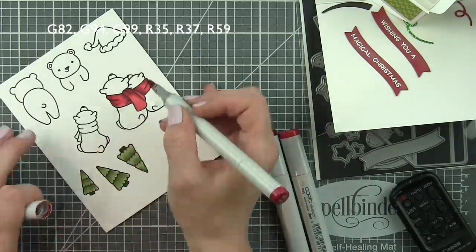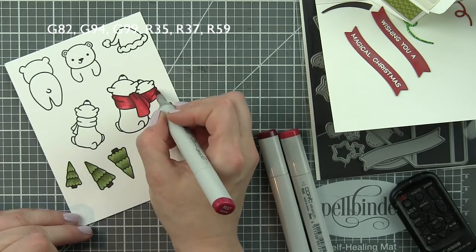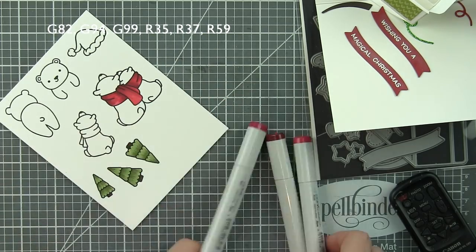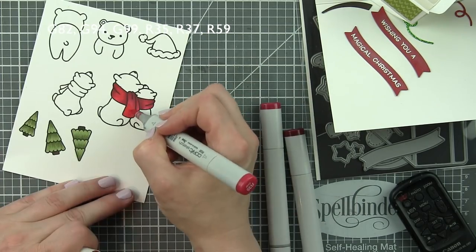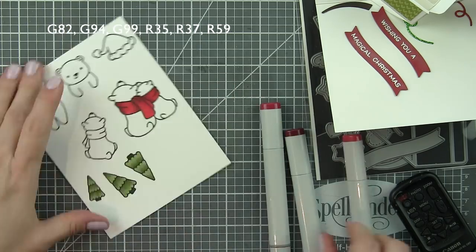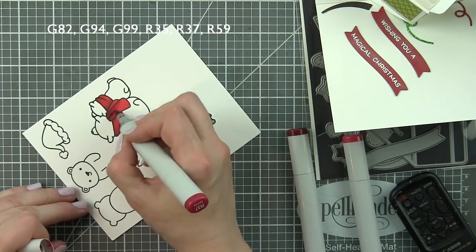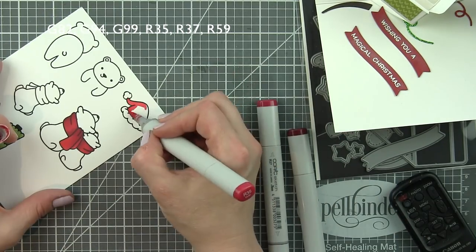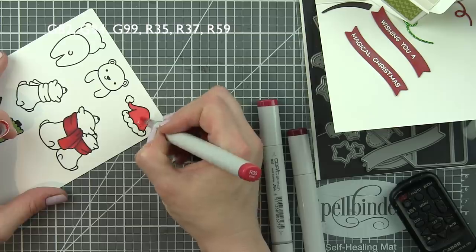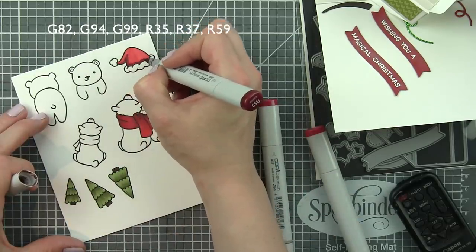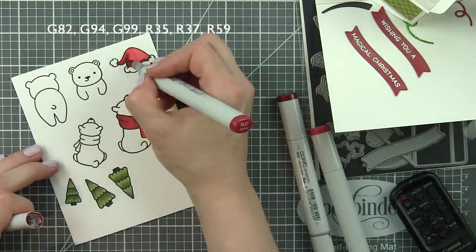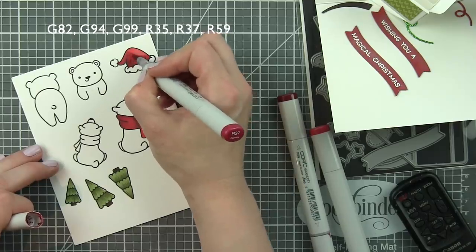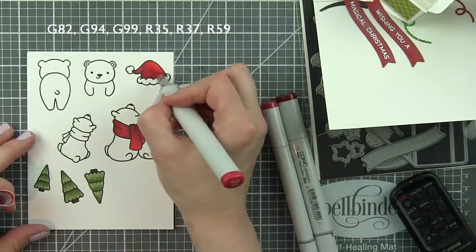I'm coloring in anything red with R35, 37, and 59. This is kind of my new favorite red color combo for holiday, for autumn, just really, really pretty. In addition to coloring in the scarves for my little bears for the front of the card, we're going to take a white pen and add even more detail because that's kind of my jam. I love doing that. I think it's so fun.